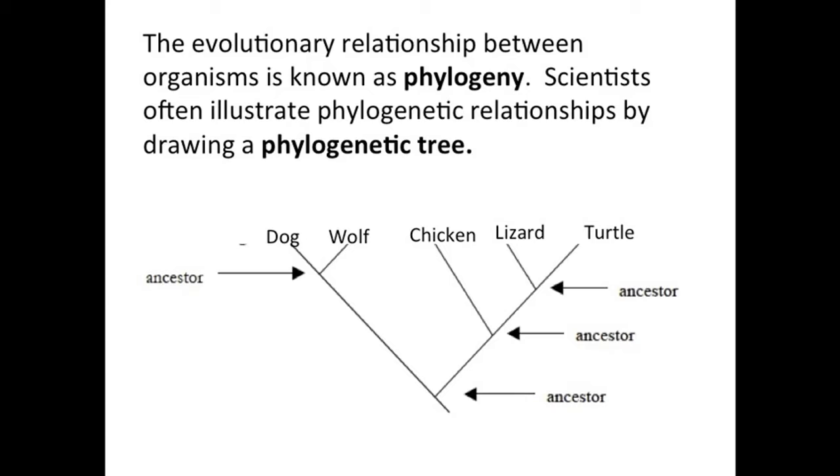When you look at these diagrams, the branch tips represent existing species. So for this phylogenetic tree, we have a dog, a wolf, chicken, lizard, and turtle at the branch tips.